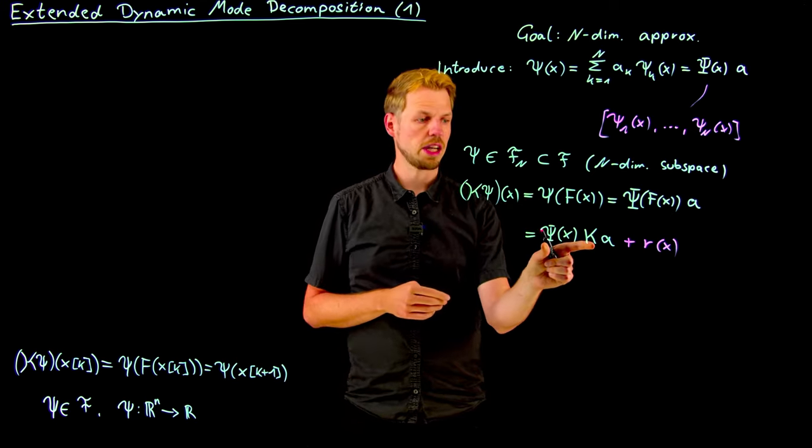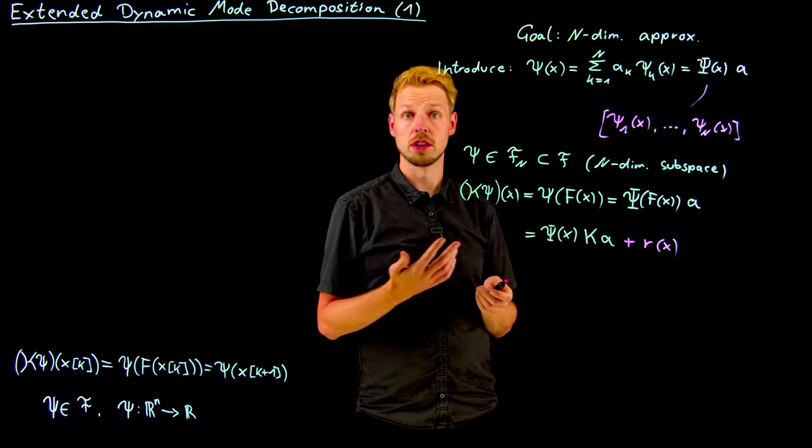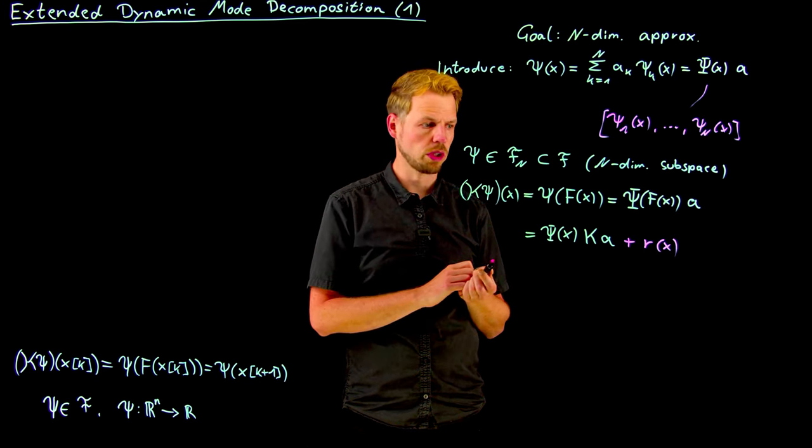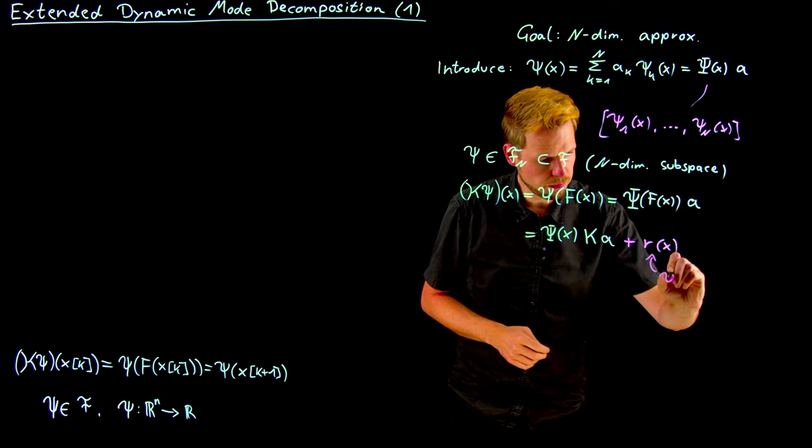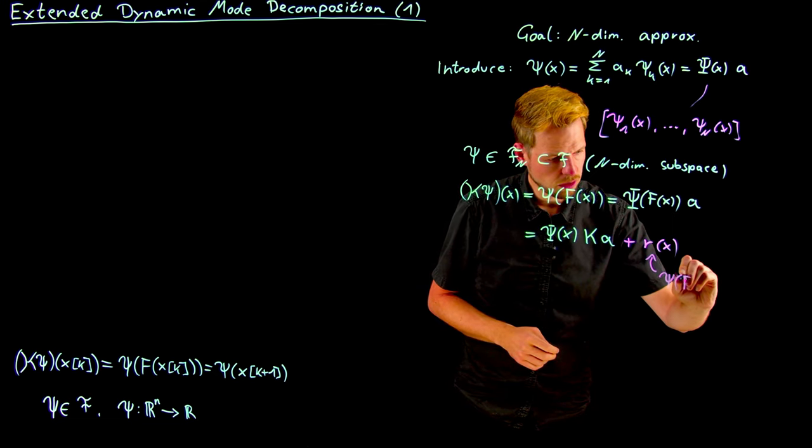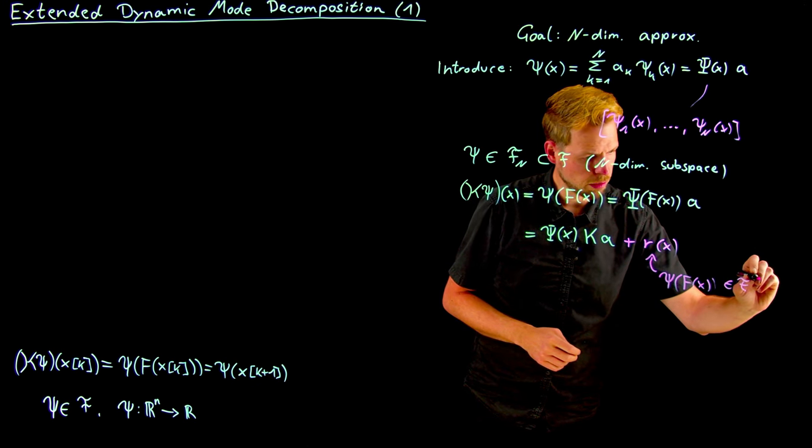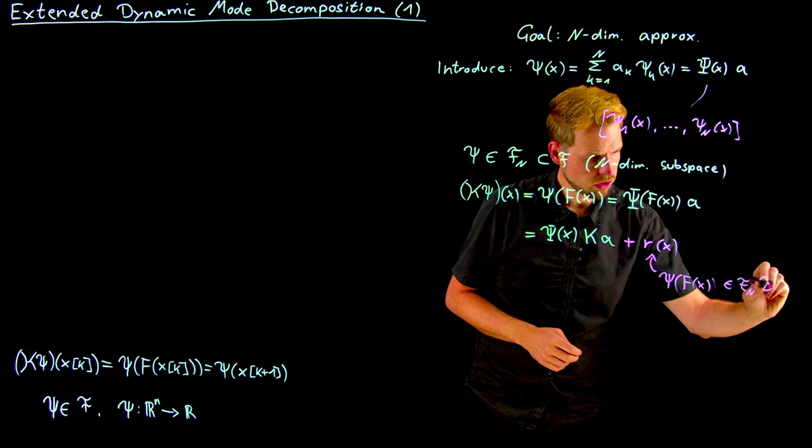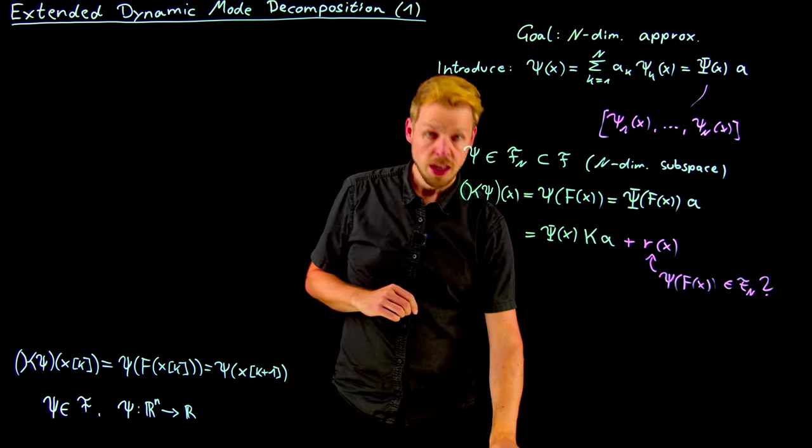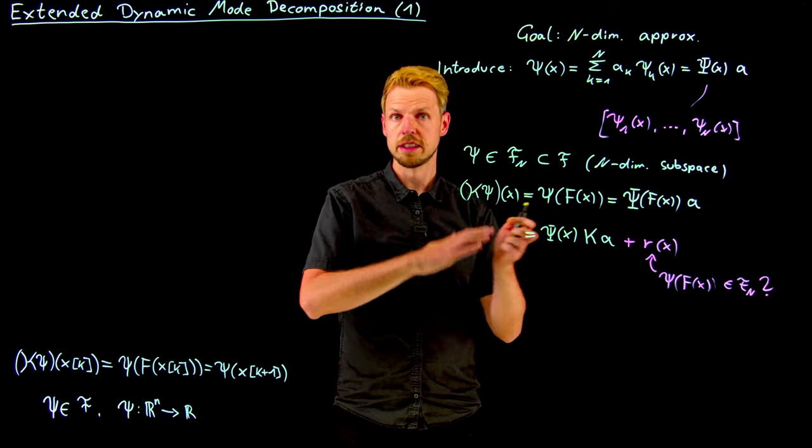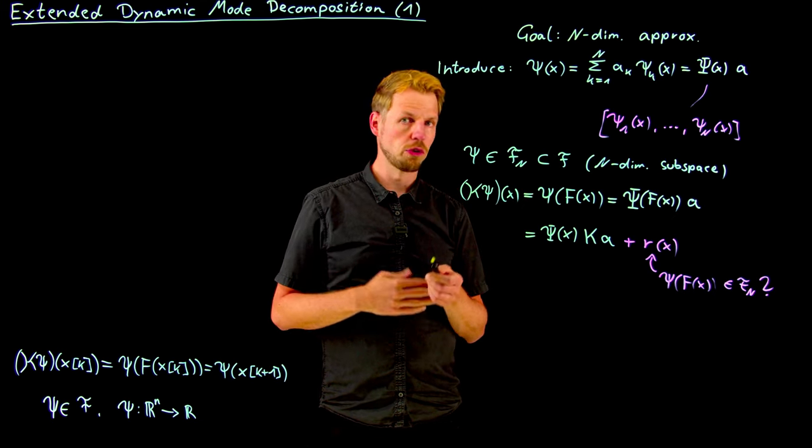But oftentimes this is not the case. If we choose eigenfunctions, then we have this exact correspondence and this residual term would be zero. However, eigenfunctions are not known if we do not know the Koopman operator. So this term really has to be addressed by the question whether the observable function we produce is also an element of this subspace that is defined by our basis functions. In general it's not, and so here is where data comes into play, very similar to other data-driven techniques for system identification.